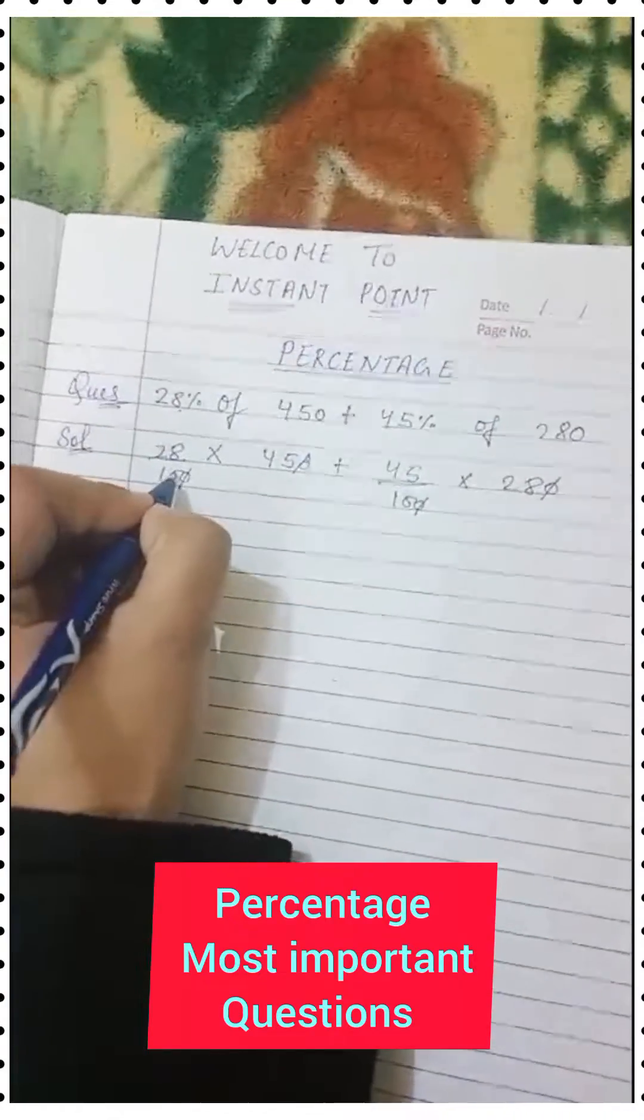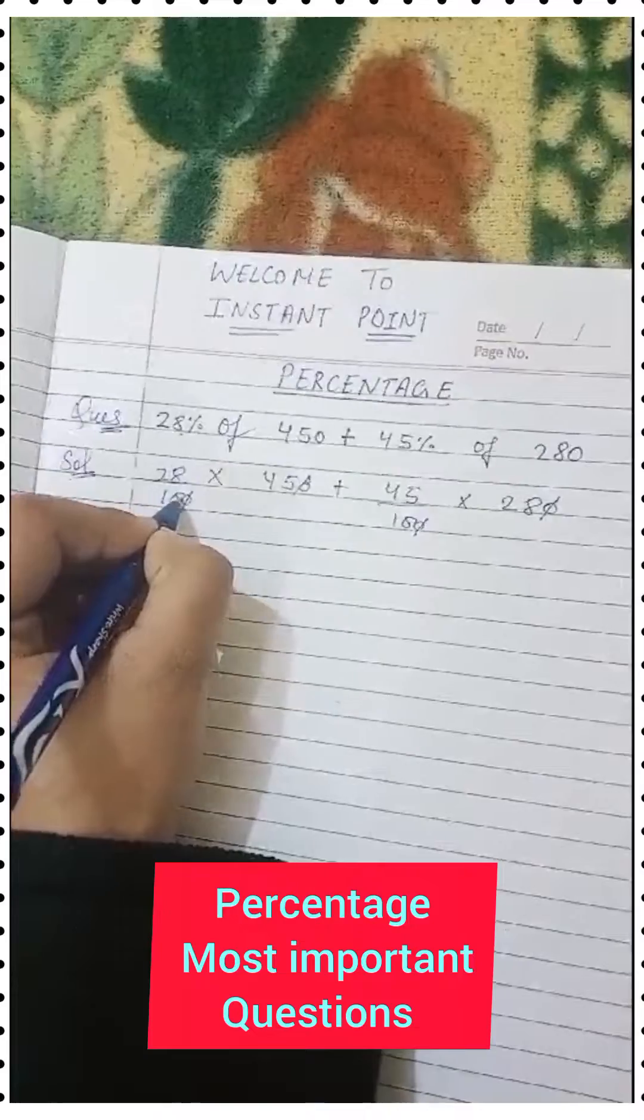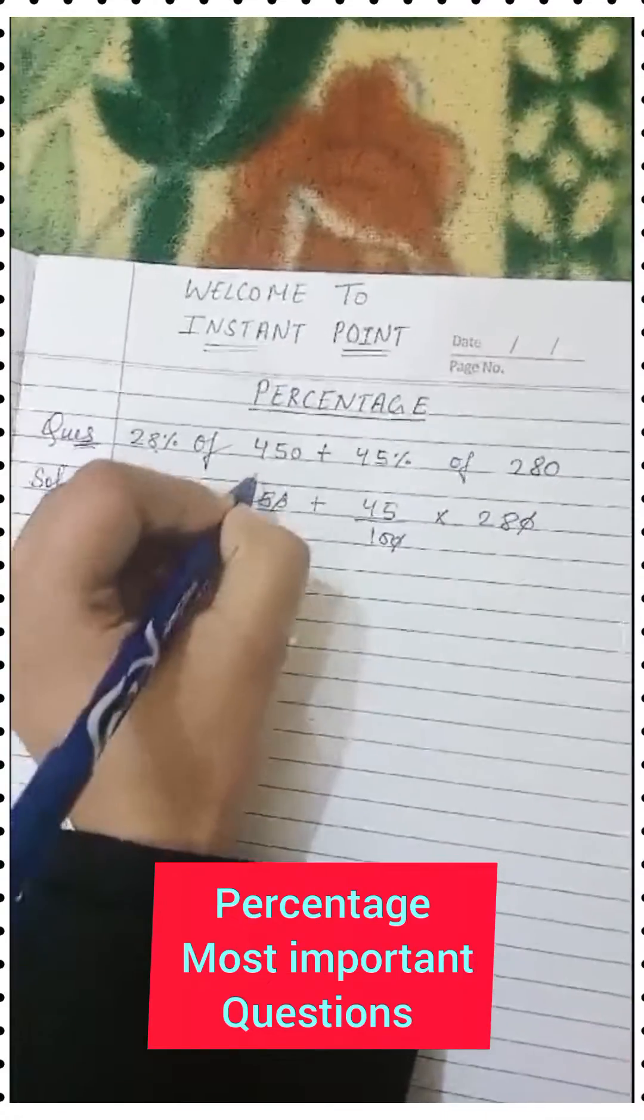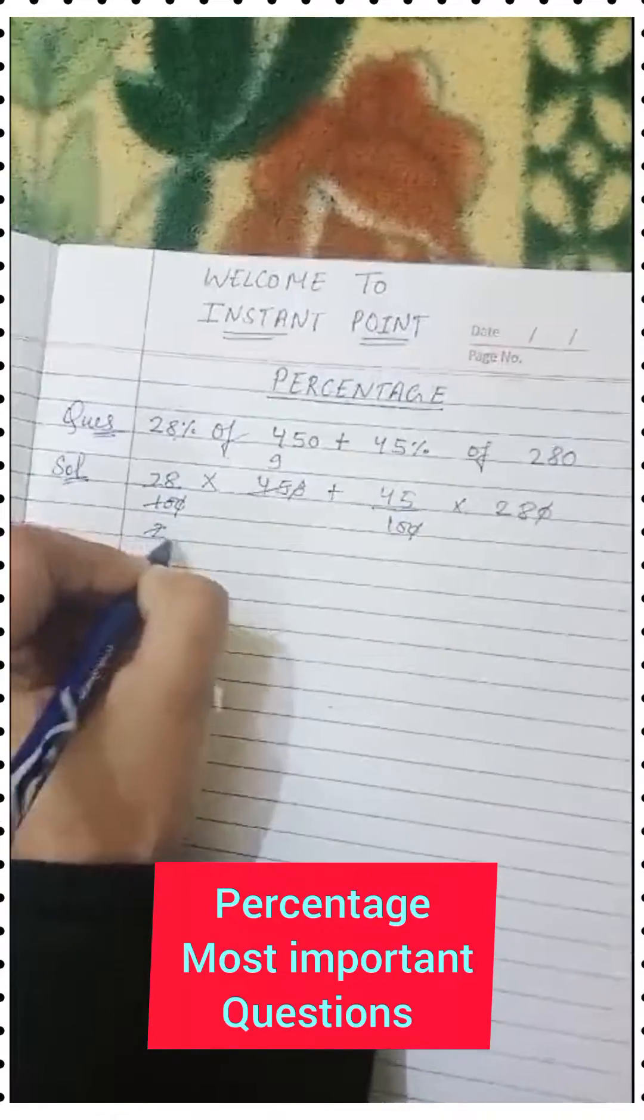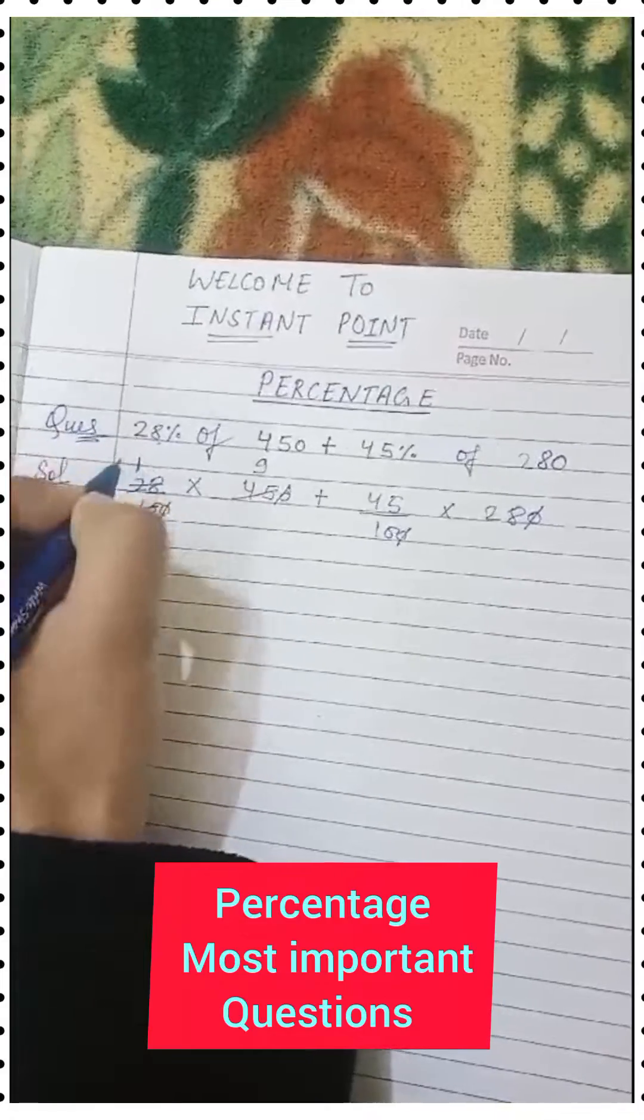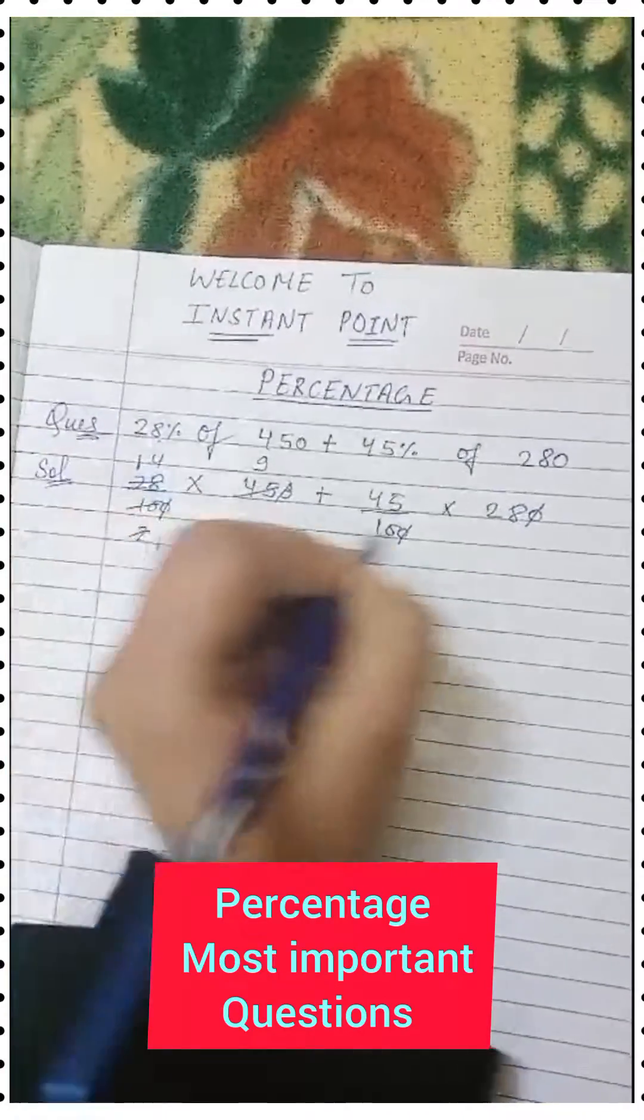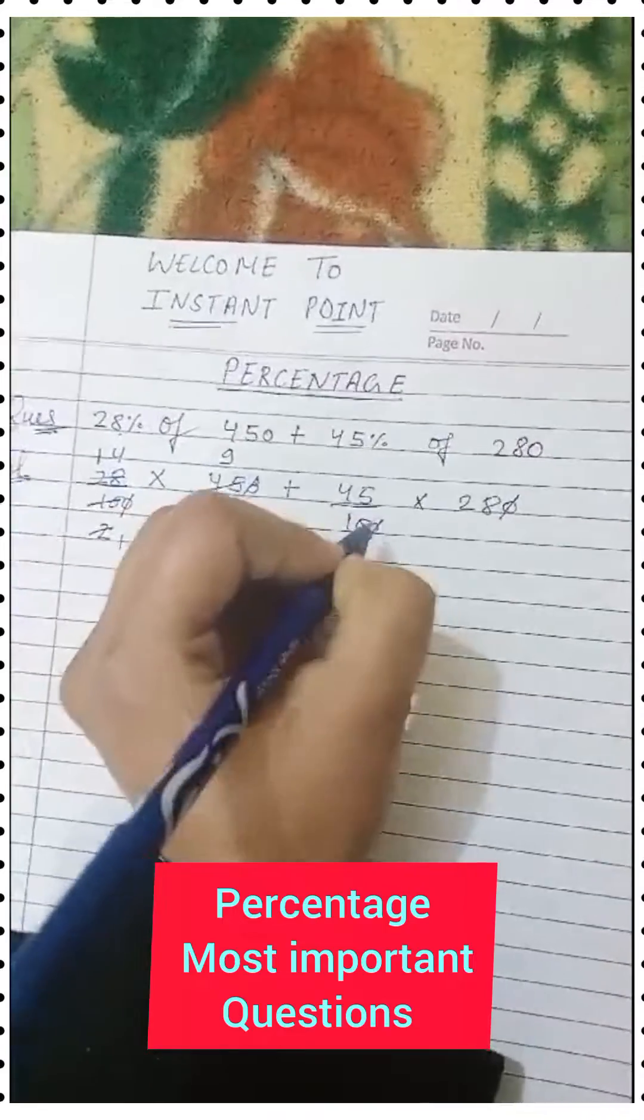We can use the 5 table to simplify: 5×2=10, 5×9=45. Then we have the 2 table: 2×1=2, 2×2=4, 2×4=8.